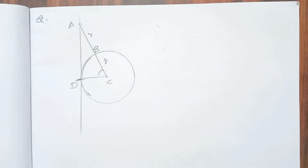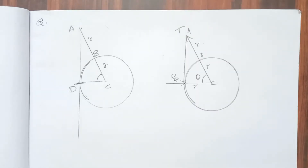If we have a free body diagram, we draw the free body diagram. We identify the radius in the diagram.